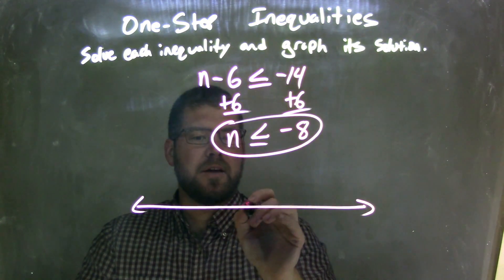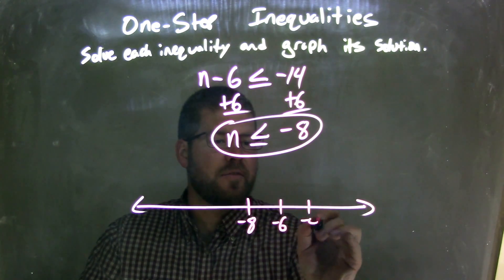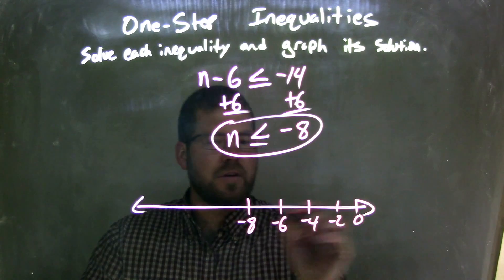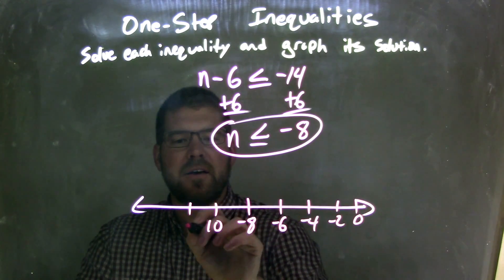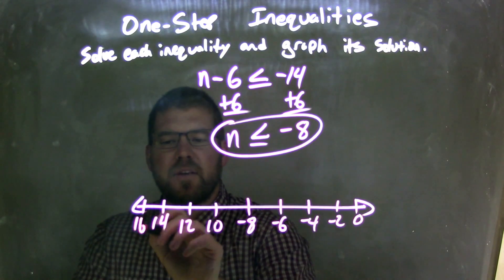So, let's put negative 8 here, and this one we go by 2's. So negative 6, negative 4, negative 2, here's 0, we've got 10, 12, 14, and 16. Why not?